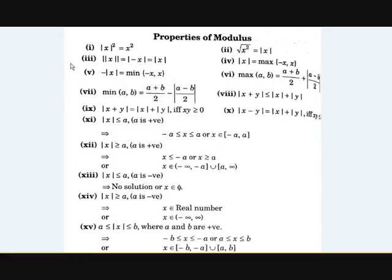There are some properties of modulus functions, similar to logarithmic functions. The first property is: modulus x whole squared is equal to x squared, because squaring makes negative values positive. And root of x squared is equal to modulus x. The third property is: modulus of modulus x equals modulus of minus x equals modulus x, because applying modulus to any value always gives a positive result, making the second modulus unnecessary.